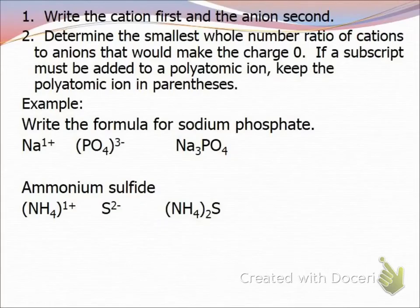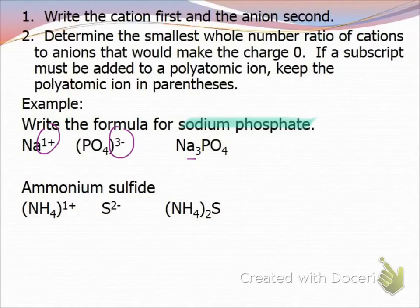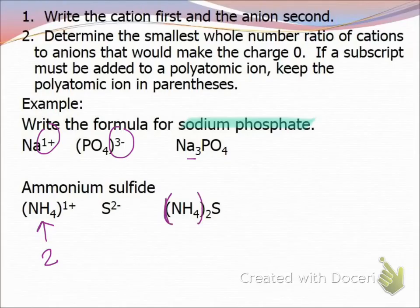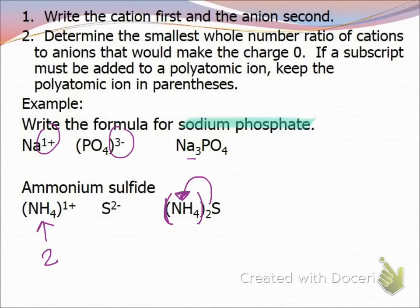For sodium phosphate: sodium is +1 and phosphate is 3−, so it takes three sodium to go with one phosphate: Na₃PO₄. For ammonium sulfide: ammonium is NH₄⁺ and sulfide is 2−, so two ammoniums go with one sulfide. When a polyatomic ion needs a subscript greater than one, put parentheses around it and write the subscript outside. So it's (NH₄)₂S.